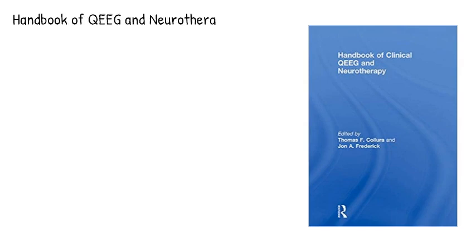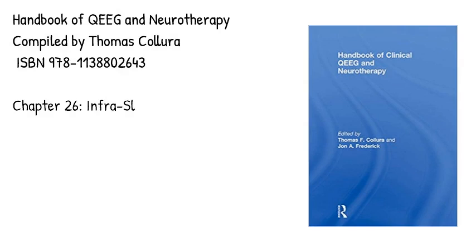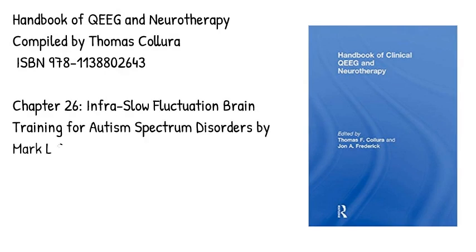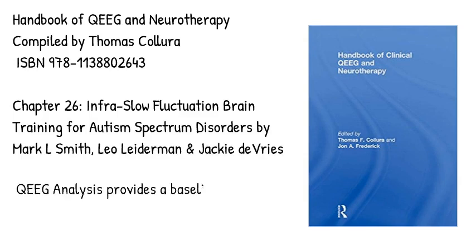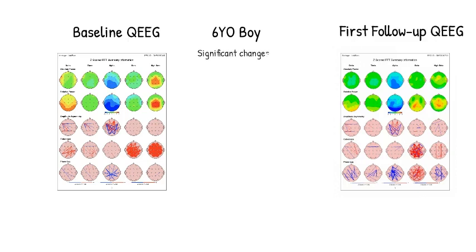In the Handbook of QEEG and Neurotherapy, we have provided a chapter on infraslow fluctuation brain training for autism spectrum disorders. We have used QEEG analysis to provide a baseline picture to understand the presenting autism spectrum characteristics. In one case study with a six-year-old boy, significant changes in the QEEG were observed.